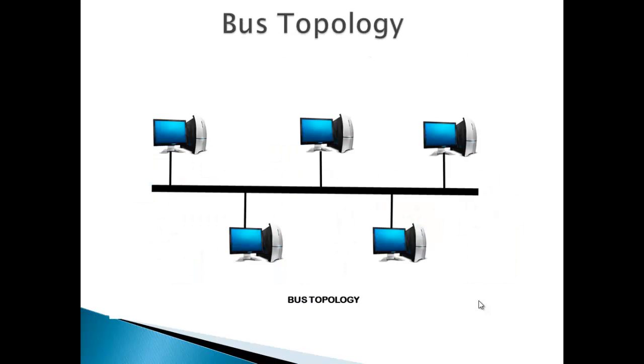Bus topology. Bus topology is the simplest of network topologies. Look at the picture. In this type of topology, all the nodes are connected to the single cable called bus by the help of interface connectors. This central cable is the backbone of the network and it is known as bus.